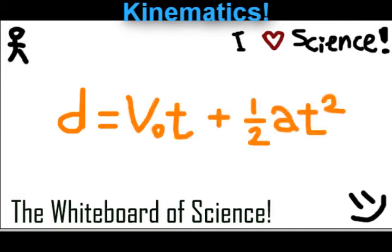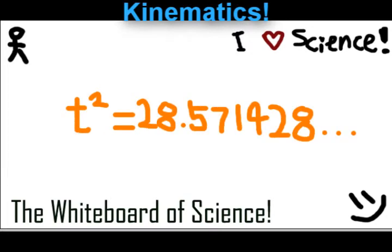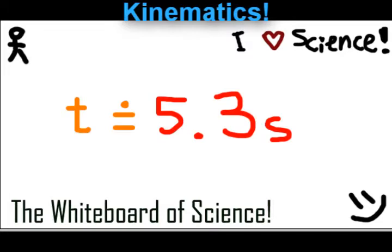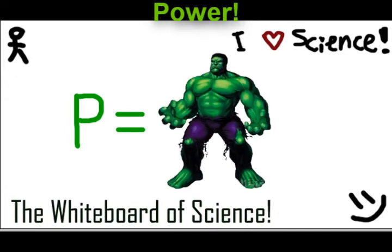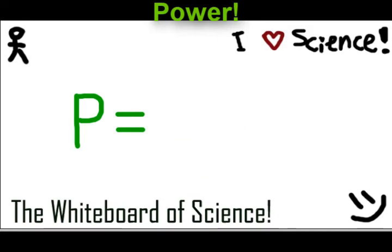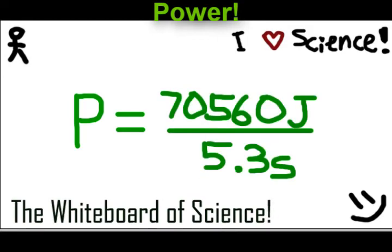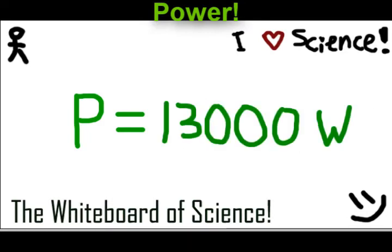Let's figure out how long they take to come down that hill. When we plug in the numbers, we get approximately 5.3 seconds. So, how powerful are these skiers anyways? Power, by definition, is work over time. Plug and chug — and we get approximately 1,300 watts.